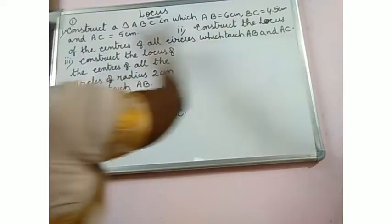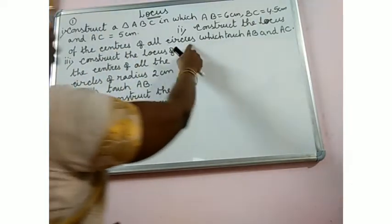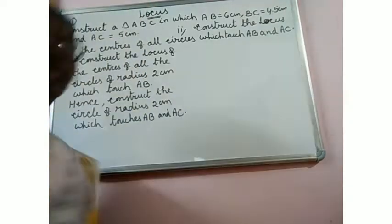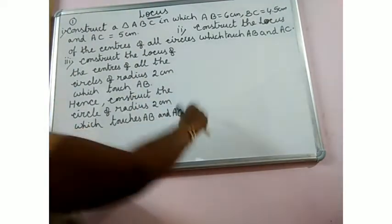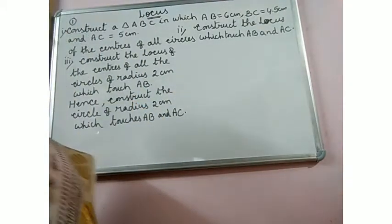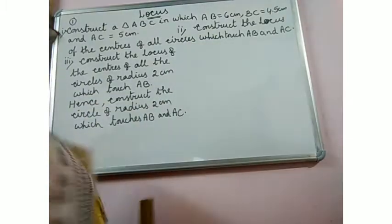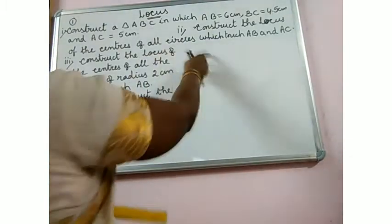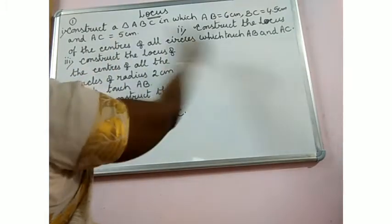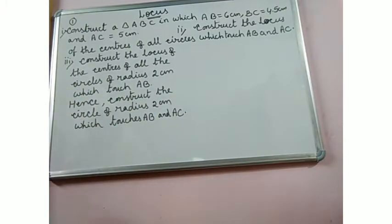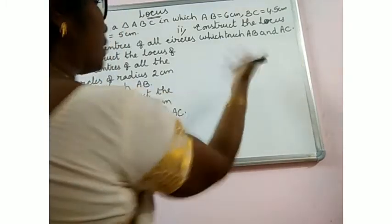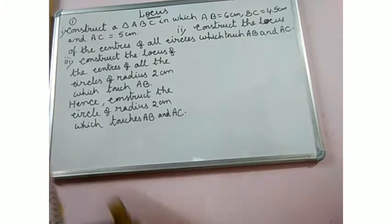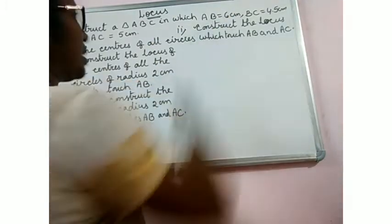It is given to construct the locus of the centers of all circles which touch AB and AC. So if we take AC as a base it will be easy for us to construct this. A should be the vertex, so let us take AB as 6cm here.